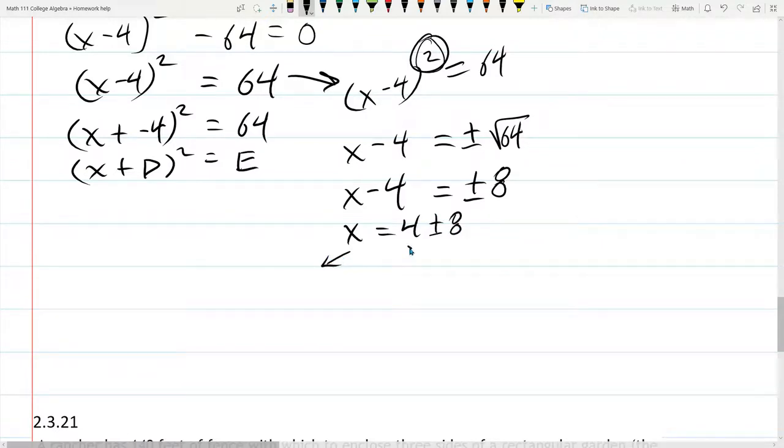So, there's a plus or a minus. You're probably saying the right thing. Here's the positive 4 plus 8. Here's the negative 4 minus 8. And 4 minus 8 is negative 4. 4 plus 8 is positive 12.